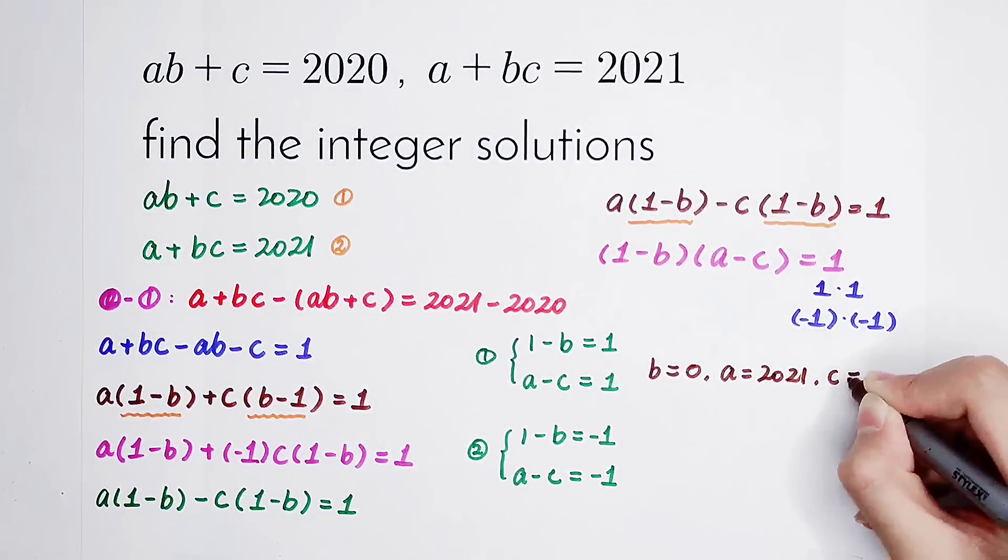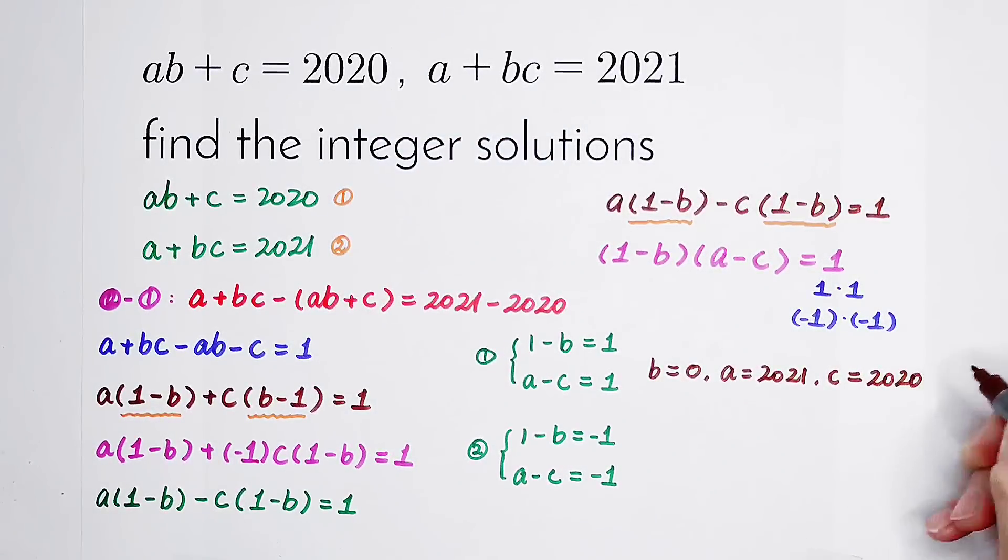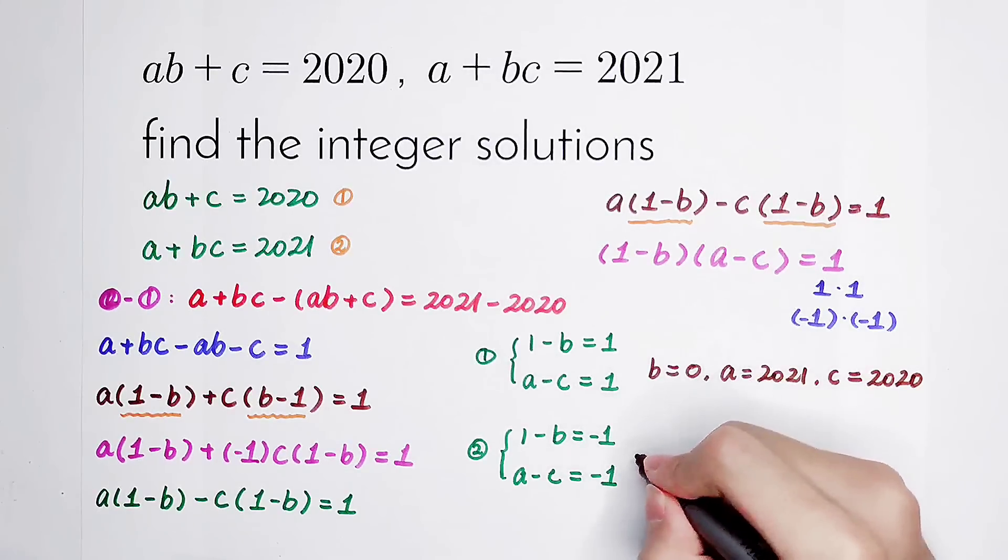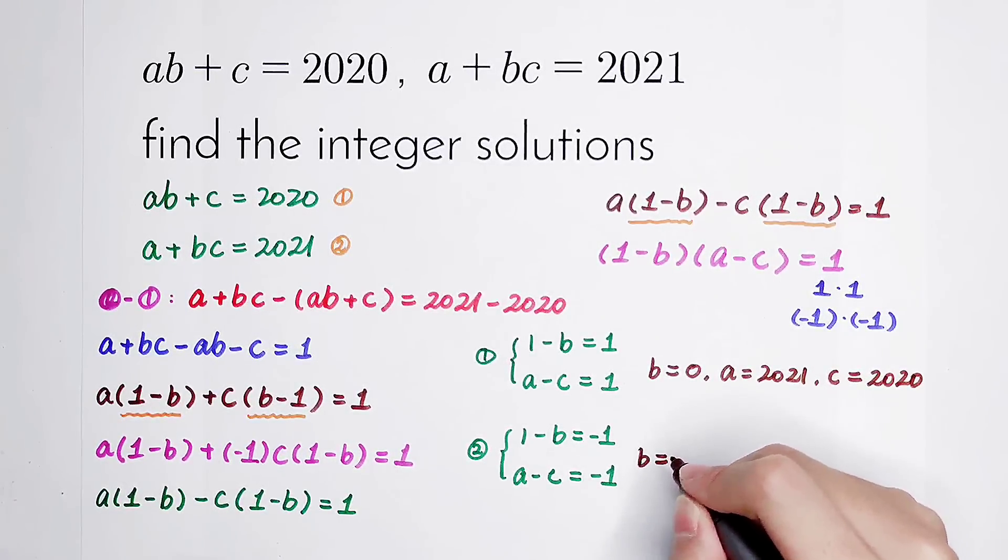So C is the same way to get it, 2020. The second case, we can solve B. It can also be solved easily. That is, 1 minus